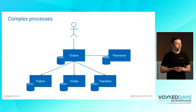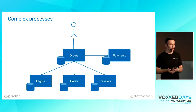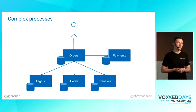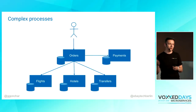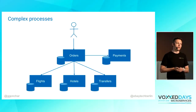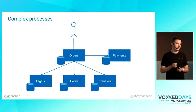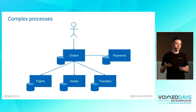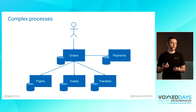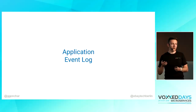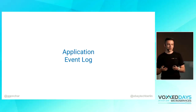But what if it gets more complex? Imagine we are booking a trip — consisting of flights, hotels, and transfers. Here we have five service participants. In the previous example we checked status in one service and another. With five services it's already getting complex, so we can apply another solution: the application event log.